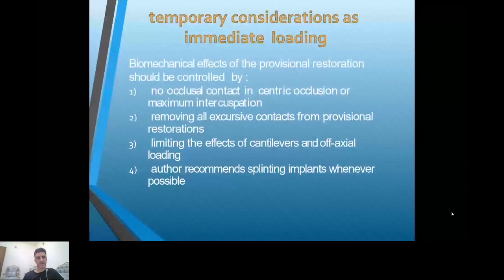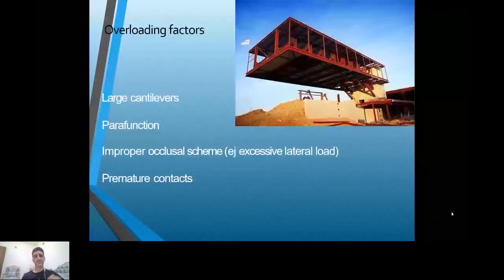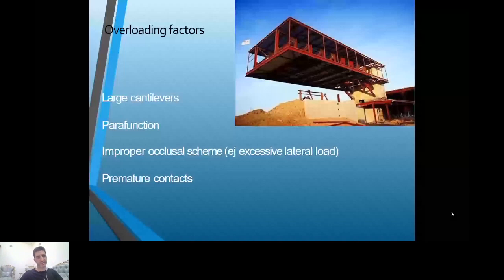Temporary considerations include: no occlusal contact even in maximum intercuspation, removal of all excessive contacts from provisional restoration, limiting cantilever effect or avoiding cantilever whenever possible, and splinting implants whenever possible. Overloading factors include: large cantilevers, parafunctional forces, improper occlusal scheme, lateral forces, and premature contacts. When one implant has contact but the rest of the bridge does not, load concentrates on that single implant rather than being distributed.